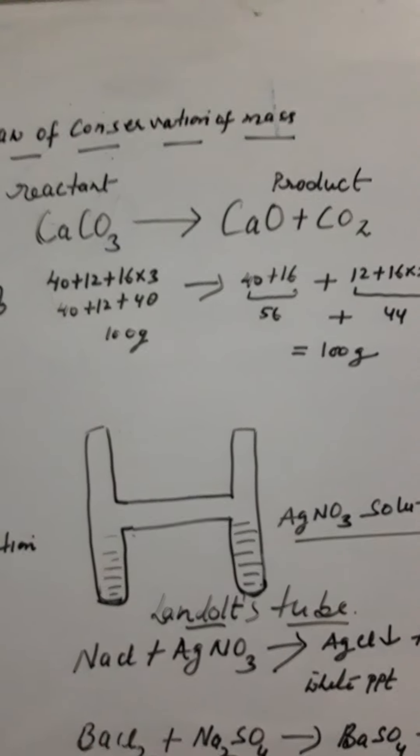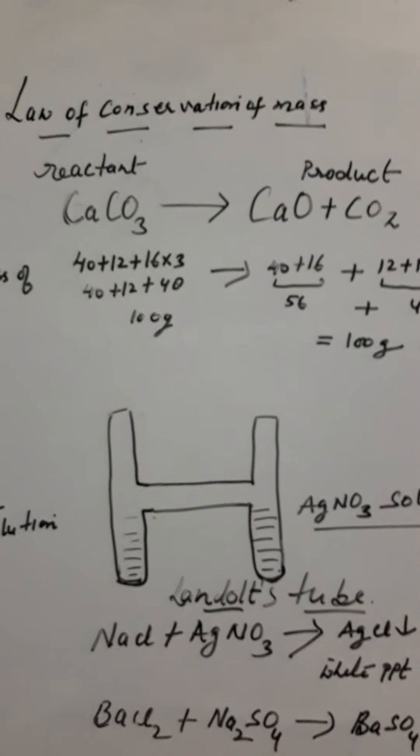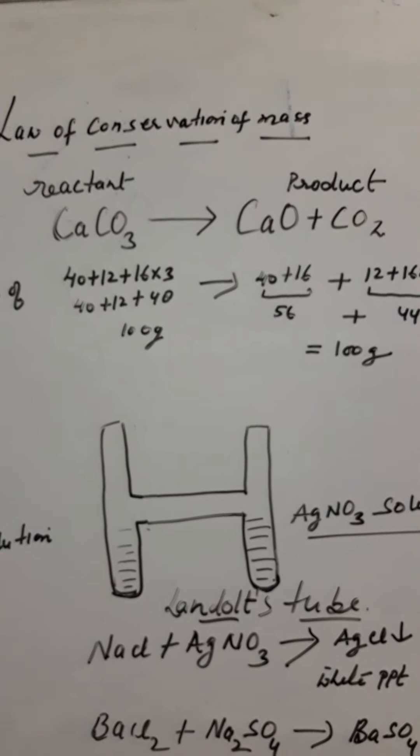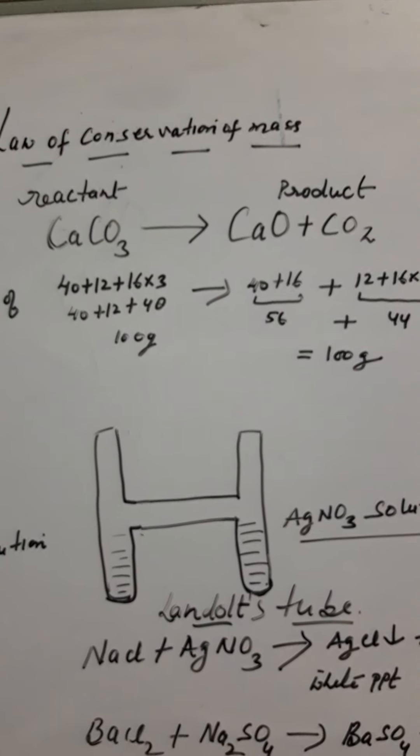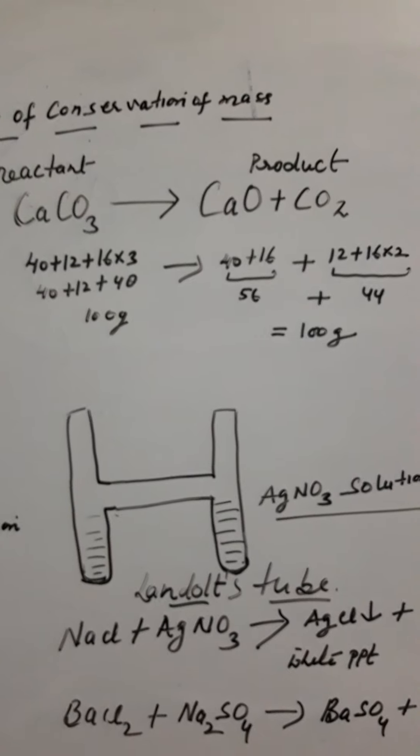I have written one chemical equation you all can see. Calcium carbonate (CaCO3) when heated will decompose to give calcium oxide (CaO) and carbon dioxide (CO2). Now we will calculate the mass of calcium carbonate used and the mass of calcium oxide and carbon dioxide produced.